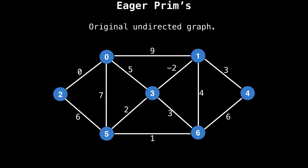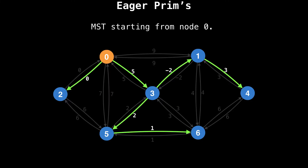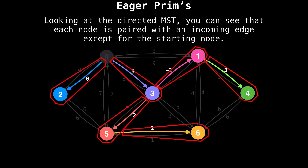Suppose we have this undirected graph. The equivalent directed version of this graph looks like this. A possible minimum spanning tree starting at node zero might be the following highlighted in green. Notice that on this directed MST, each node is paired with exactly one edge, except for the starting node. So in a sense, there seems to be a relationship we can take advantage of here, which is that each node is paired with exactly one incoming edge.